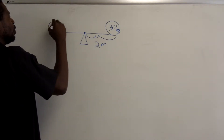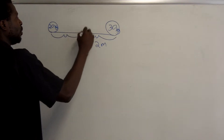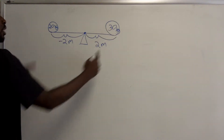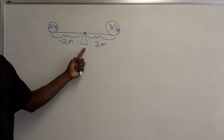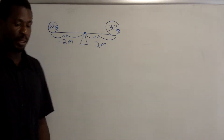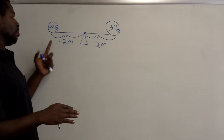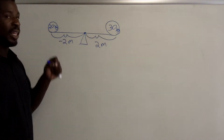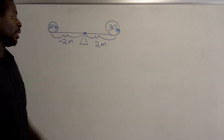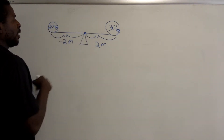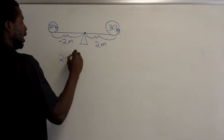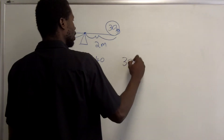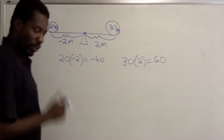Now there's another child over here — a smaller child who's only 20 kilograms — at the same distance away. Because we're calling the fulcrum the origin, this side is negative two meters and the other is positive two. The seesaw is four meters long with the fulcrum in the middle. We know this seesaw will rotate clockwise because the 30-kilogram child is heavier. The moment of the 20-kilogram child is 20 times negative two, which is negative 40, and the moment of the 30-kilogram child is 30 times 2, or 60.